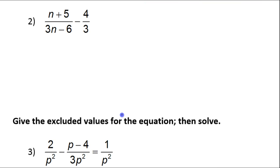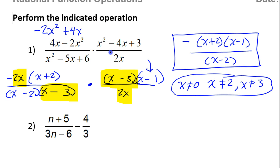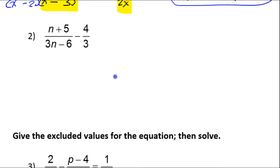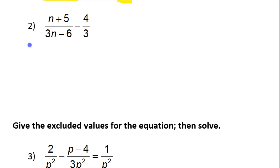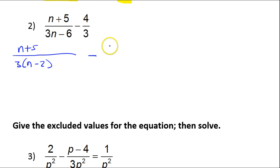Moving on to number 2 — this is a subtraction problem, so it's a little different. We need to make like denominators when subtracting. First thing we do is still factor. I have n plus 5 in the numerator — nothing to factor there. But in the denominator, the GCF is 3, giving 3 times n minus 2. Please do not leave this as 3n minus 6 — that's a common mistake. You definitely want to take out that common factor.